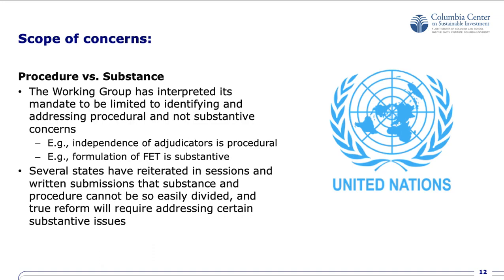The scope of concerns that the Working Group is working on has been limited to procedural concerns. This is how the Working Group interpreted its broad mandate granted by the commission. An example of a procedural issue is the independence of adjudicators. By contrast, the formulation of fair and equitable treatment as a standard within a treaty is a substantive issue, and therefore considered beyond the scope of discussions. In practice, it's actually very difficult to draw the line between certain procedural and substantive issues. Several states have reiterated during working group meetings and in their submissions that substance and procedure cannot be easily divided, and delegates and observers have stressed that meaningful reform will require addressing key substantive issues as well.